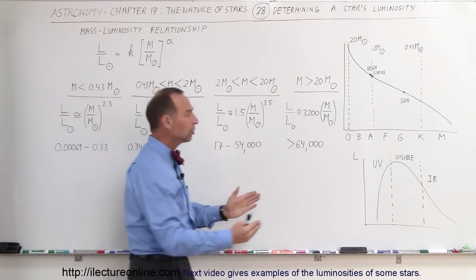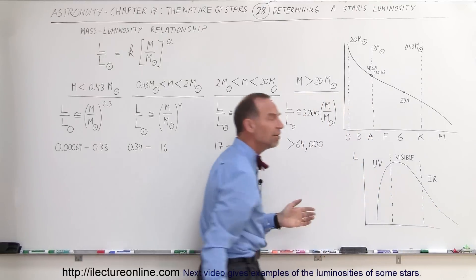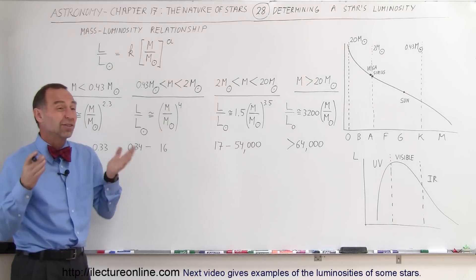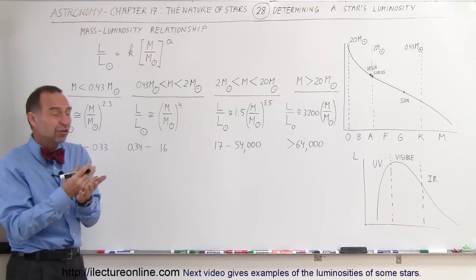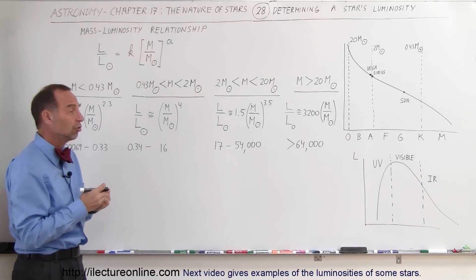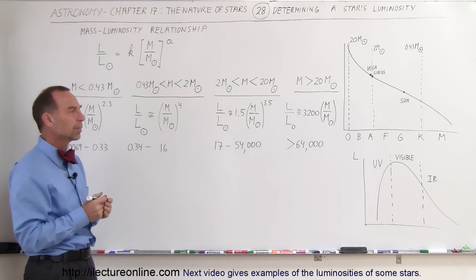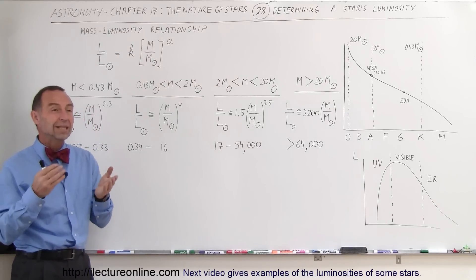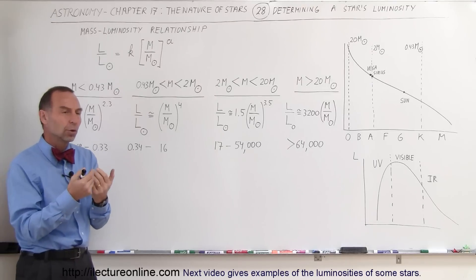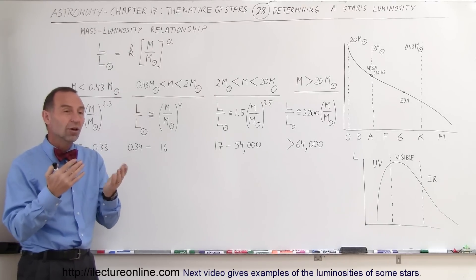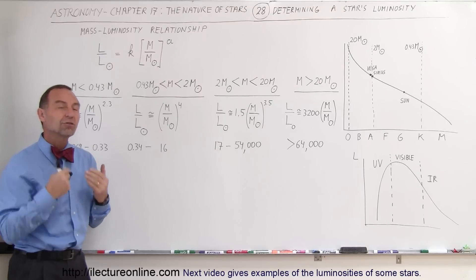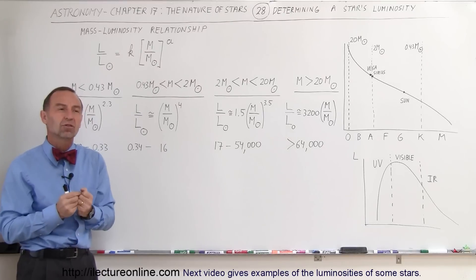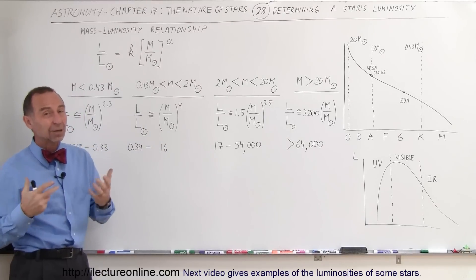When we talk about luminosity, we talk about all the energy across all three bands: UV, visible, and infrared radiation. Simply looking at a star or measuring it with a light meter is not sufficient because it won't pick up all the radiation coming from the star. Another big problem is understanding the difference between absolute luminosity and apparent luminosity. A star may appear luminous, but we need to figure out how far it is from us before we can determine how luminous it actually is.